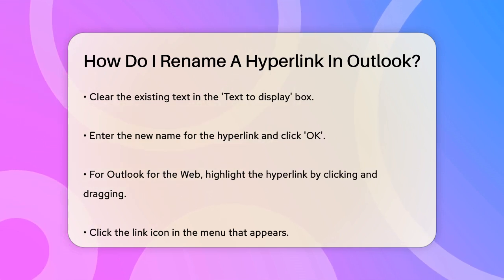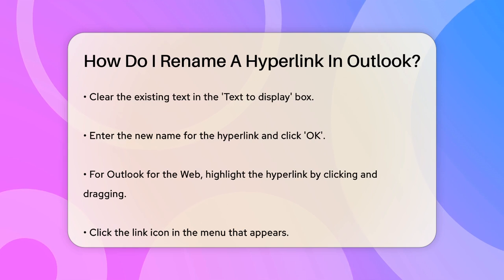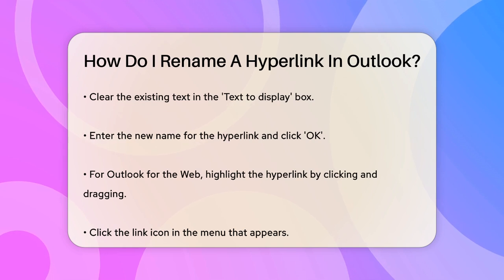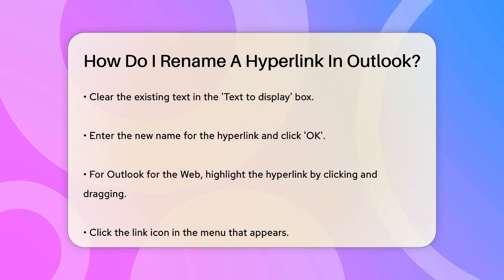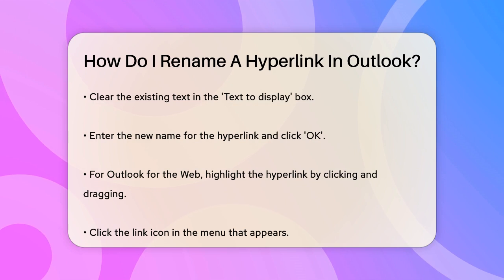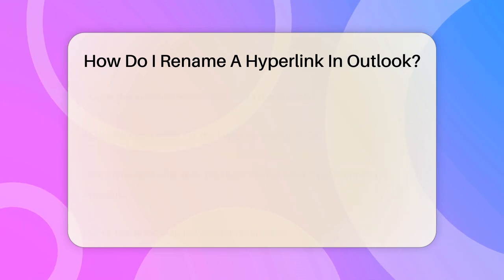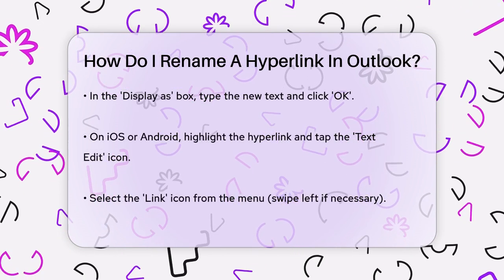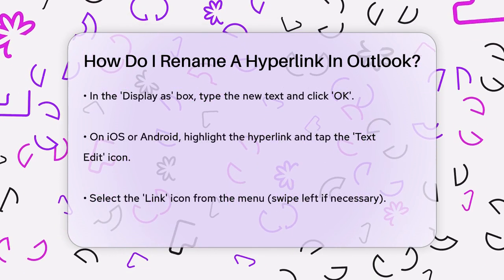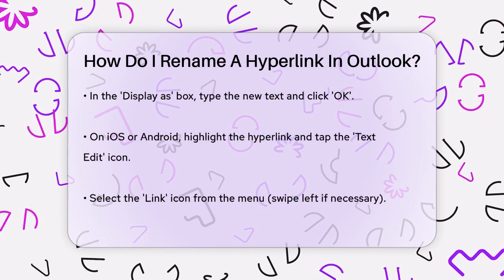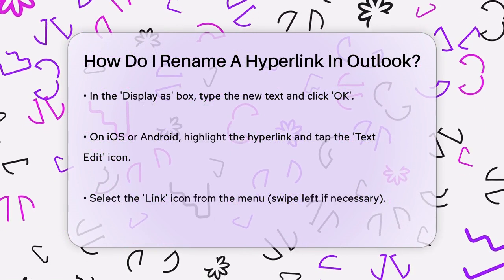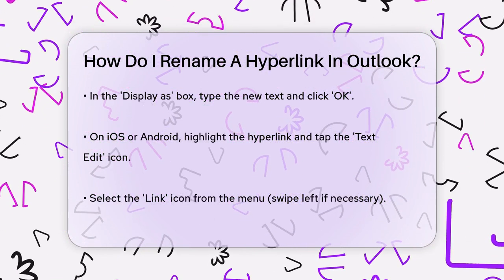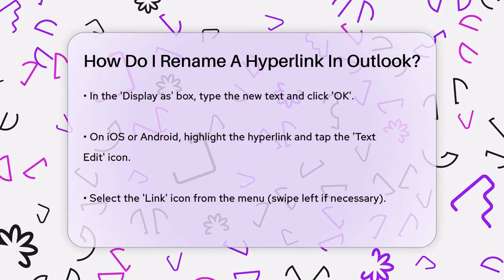If you're working with Outlook for the web, the process is slightly different. First, highlight the hyperlink you want to rename by clicking and dragging your cursor over it. Then click on the Link icon in the menu that appears. In the Display As box of the Insert Link window, enter the new text for your hyperlink and click OK.